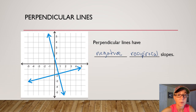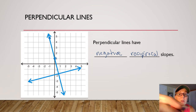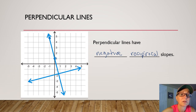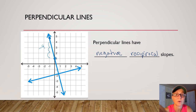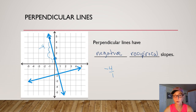Let's check it out. I'm going to pick two points on the negatively sloped line. I'm going to start with the higher one and go down one, two, three, four — so that's down four or negative four. And I'm going to go over one to the right. So one of my slopes is negative four over one.